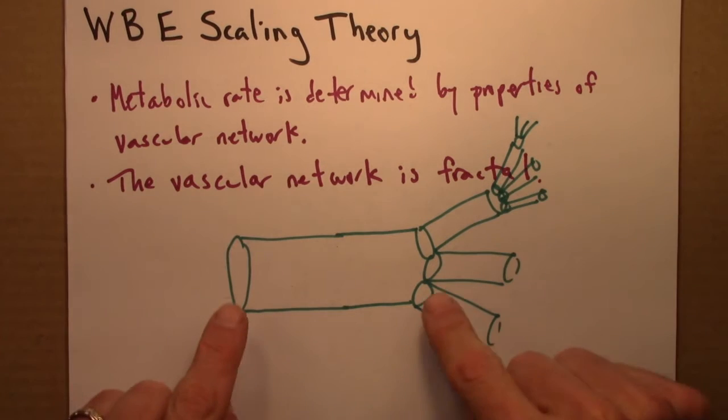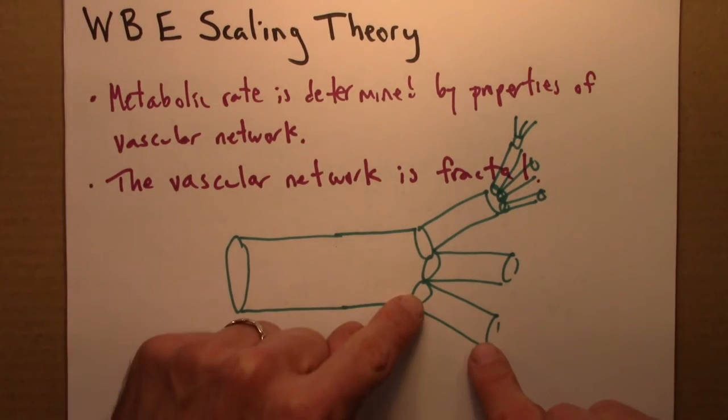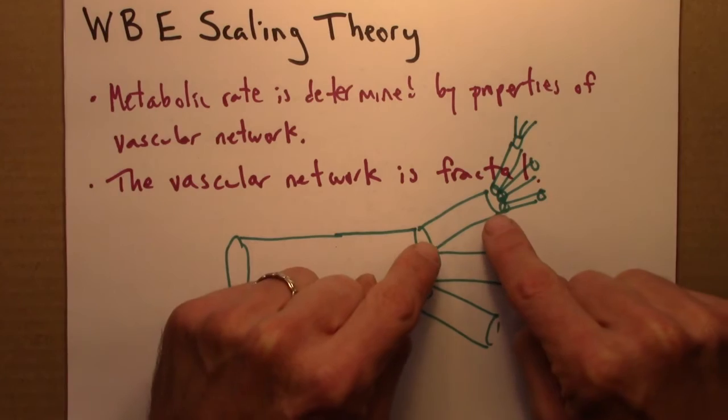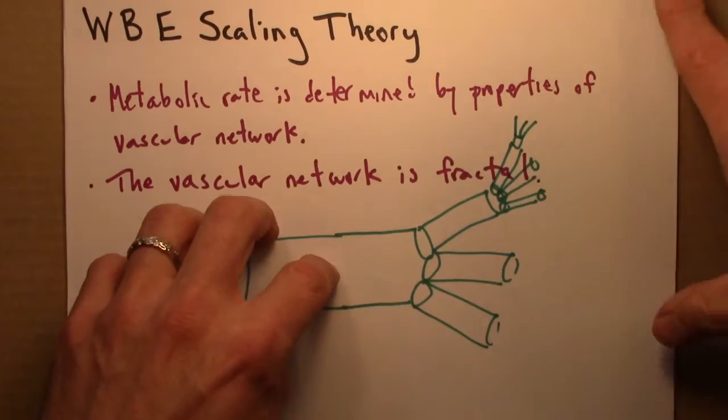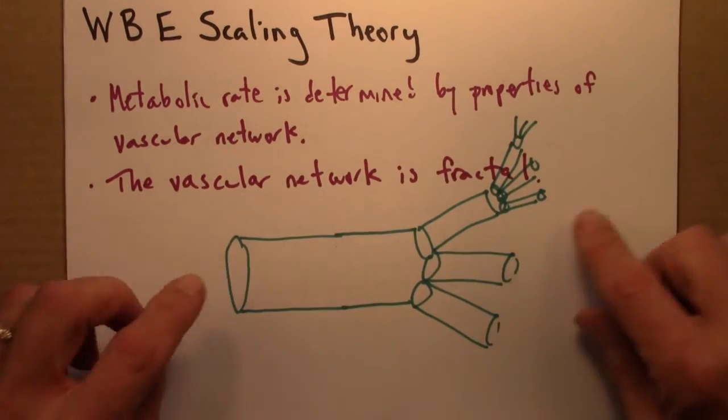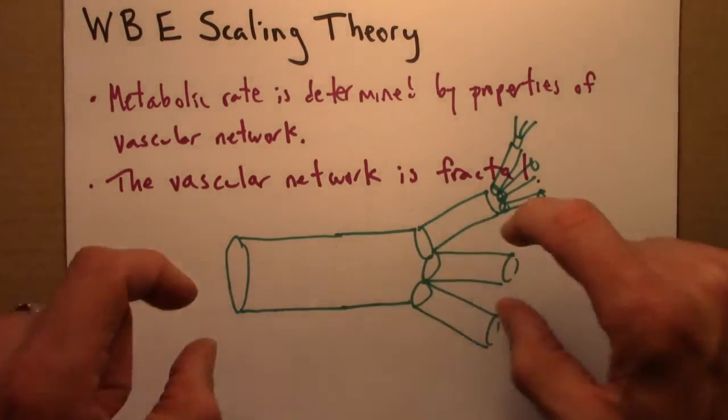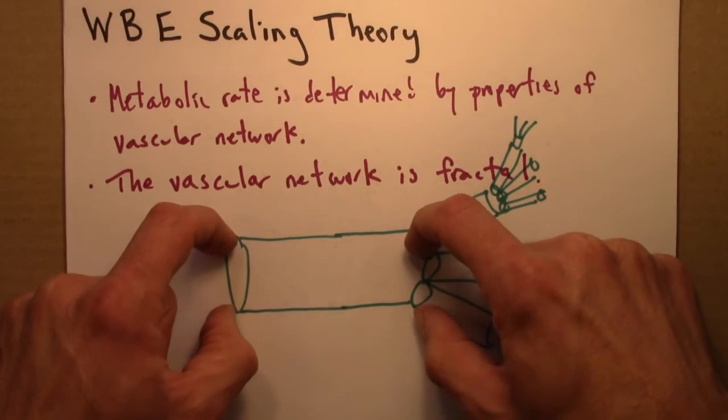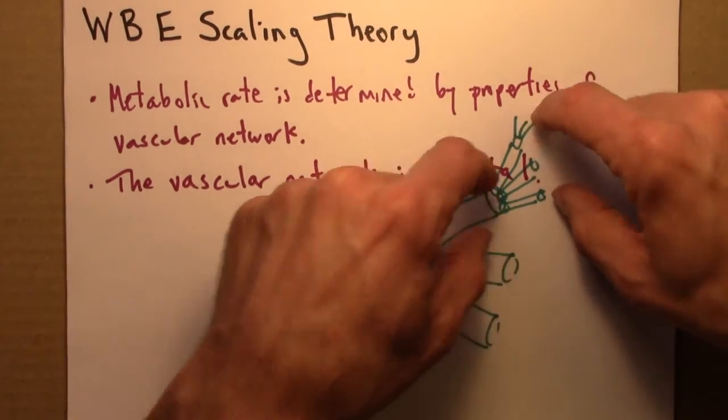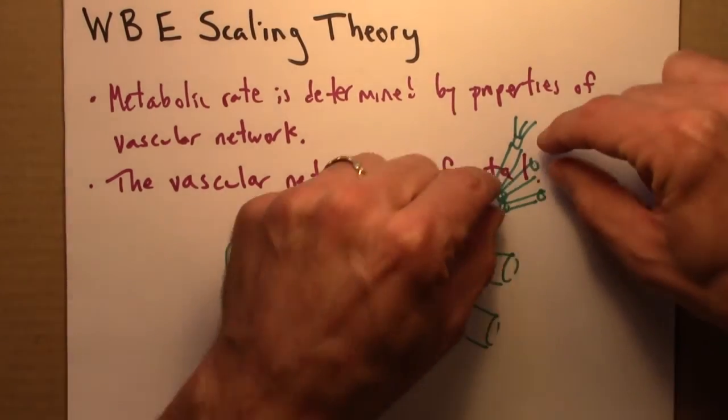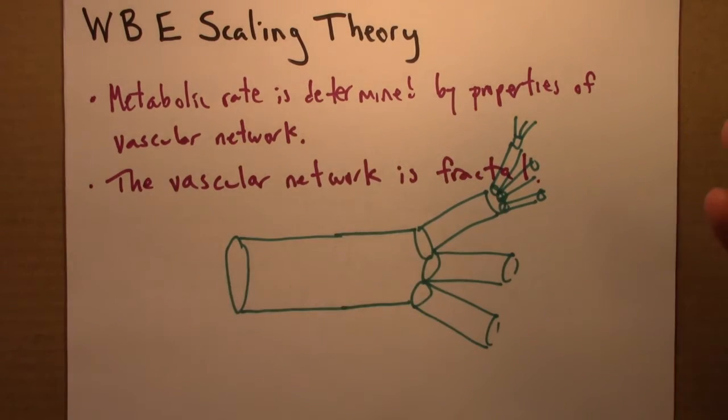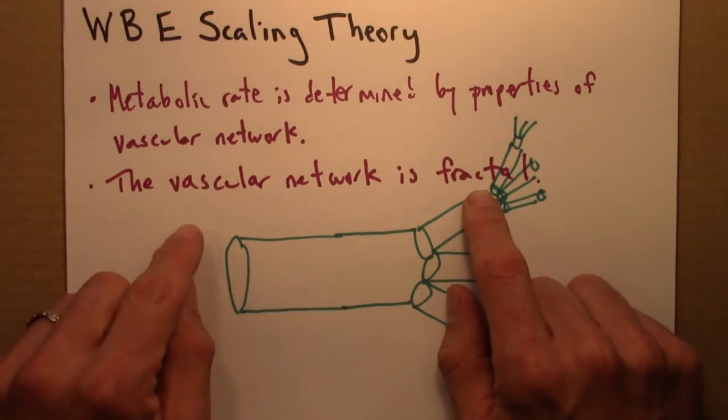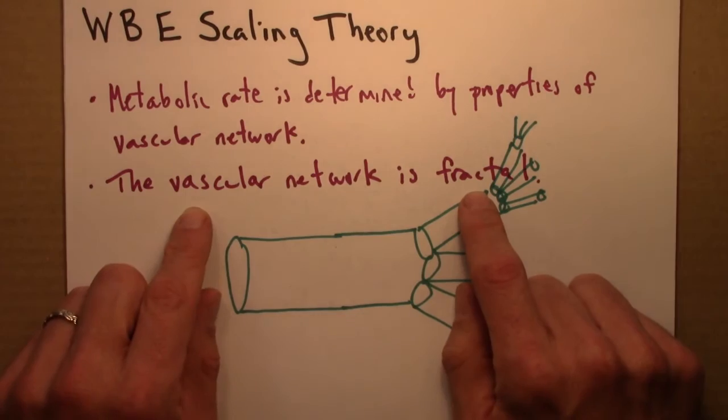Additionally, if it's self-similar, the ratio of this length to this length is the same as the ratio of this to that. So that at any scale, wherever we are in this network, and it would go on from many, many levels, 22 or so in a person. As we go from the top level, the big pipe, to the next smallest, to the next smallest, the length decreases by a fixed amount, and the radius decreases by a fixed amount. So those are all just geometric statements that go along with this assertion, this claim, that the vascular network is fractal.